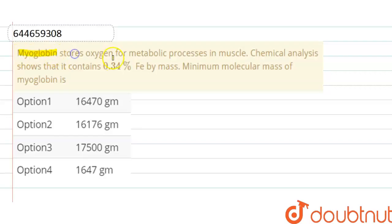Myoglobin stores oxygen for metabolic processes in muscle. Chemical analysis shows that it contains 0.34 percent of iron by mass. Minimum molecular mass of myoglobin is?